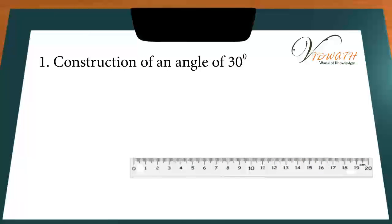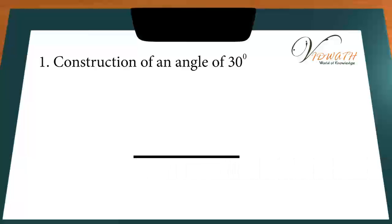The following steps are followed to construct an angle of measure 30 degrees. Steps of Construction, Step 1: Draw a line segment AB of any length.